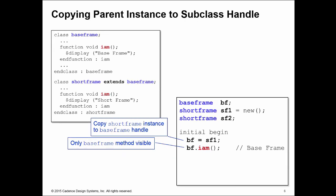The same classes are used here. An additional handle sf2 is declared on short frame. An instance is created in sf1, copied to the base frame handle bf. Calling bf.iam resolves according to the handle type and returns 'I am a base frame.' To recover the short frame instance, you might try copying the base frame handle back to the short frame handle — but this is not allowed directly. You cannot directly copy a base frame handle to a short frame handle, because you would be assuming the base frame handle is pointing at a short frame instance, and that assumption could be wrong.